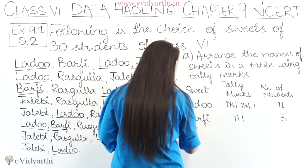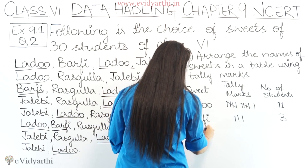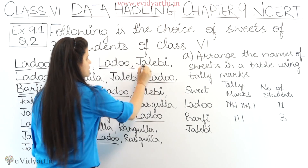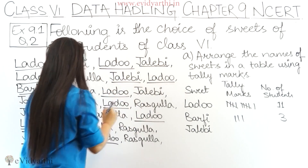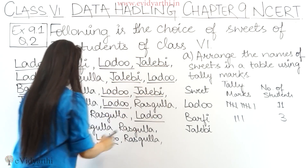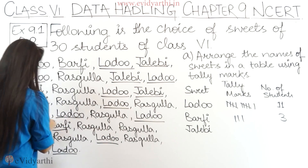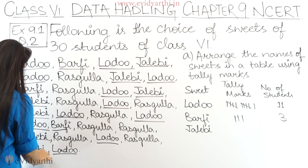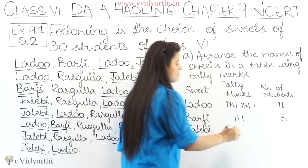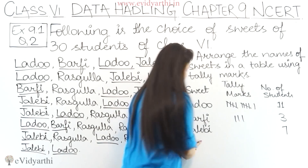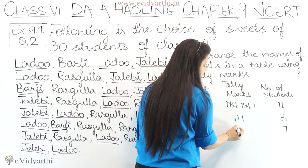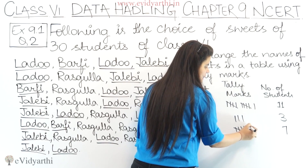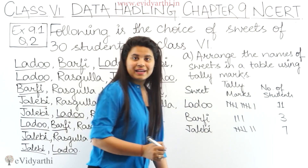Let's take the next sweet which is jalebi. Now let's count the number of students: 1, 2, 3, 4, 5, 6, 7. So we have 7 students who like jalebi. We write the tally marks for 7 here.